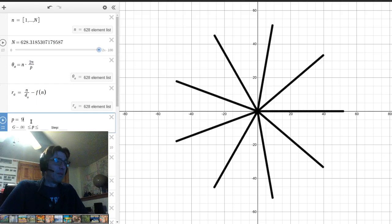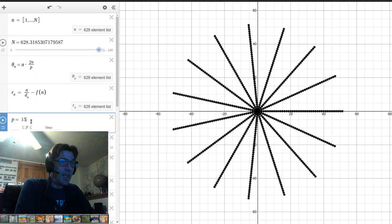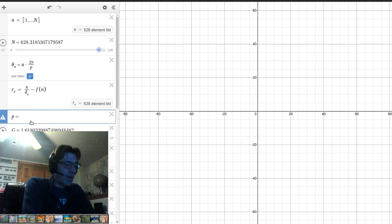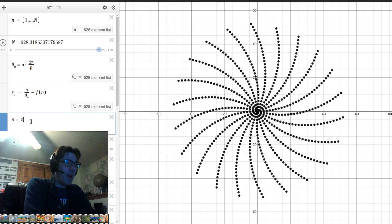So if I do 15, it's 15 spokes and so on. Now, what's interesting is when I start using other numbers, like let's say I use pi.